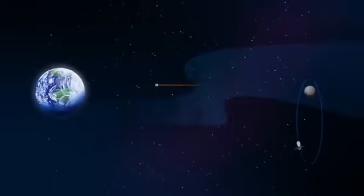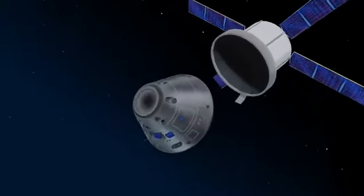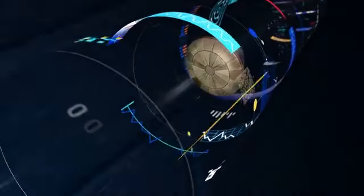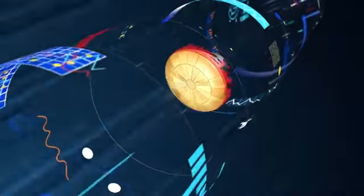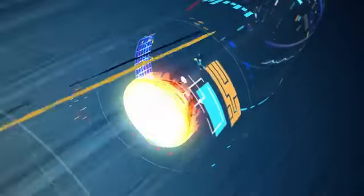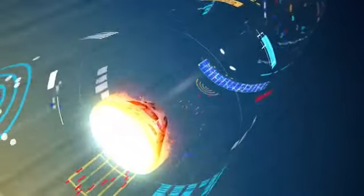As they near the end of this journey, the service module is released, and the crew module is oriented heat shield first. Entering Earth's atmosphere at 25,000 miles per hour, the friction of air slows Orion considerably, while also subjecting it to temperatures of 5,000 degrees.